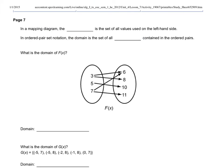In a mapping diagram, the domain is the set of all x's — all values on the left-hand side. In ordered pair notation, the domain is the set of all x's contained in the ordered pairs. For this question asking the domain of f(x), we look at the left-hand side and see the numbers three, five, and seven. Since those are the only three numbers, this is a discrete set, so we put fancy brackets around it.